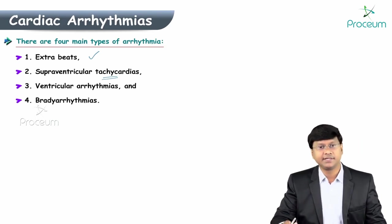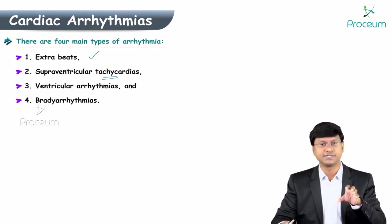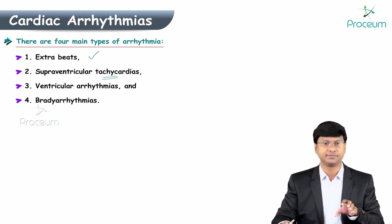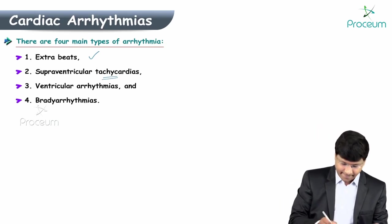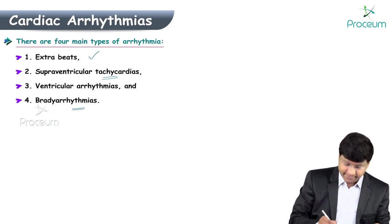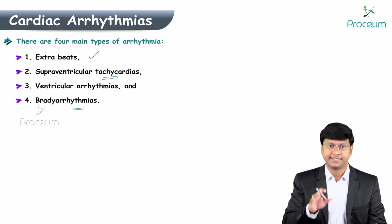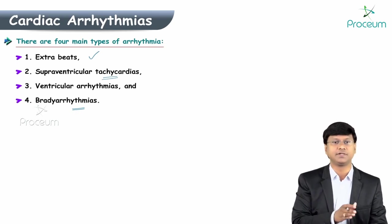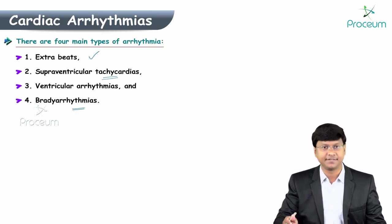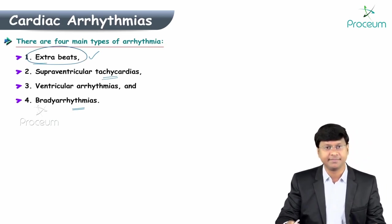The third type is ventricular arrhythmias, where abnormal impulses originate within the ventricle, including ventricular fibrillation and ventricular tachycardia. The fourth type is bradyarrhythmias, where there is an abnormal heart rate or rhythm but it will be a slow abnormal rhythm.